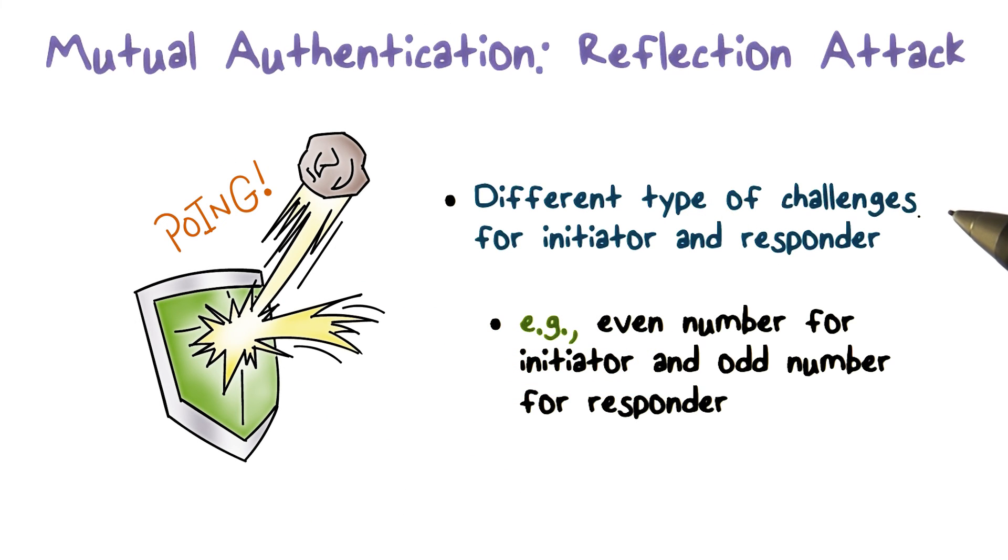Another way to prevent the reflection attack is to use different challenges for the initiator and the responder. For example, we can use even number challenge for Alice and an odd number for Bob. Therefore, when Trudy receives a challenge R1 from Bob, the challenge is an odd number. And Trudy cannot use this as a new challenge for Bob, because Bob is expecting an even number.